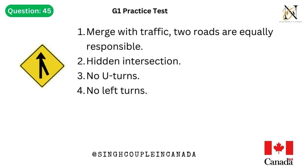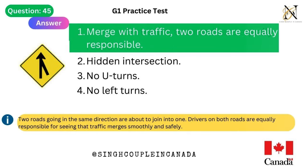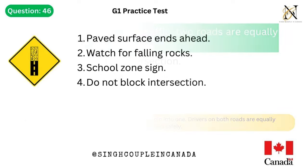Question 45. This traffic sign means: 1. Merge with traffic. 2. Hidden intersection. 3. No U-turns. 4. No left turns. Answer is 1. Merge with traffic — two roads are equally responsible. Two roads going in the same direction are about to join into one. Drivers on both roads are equally responsible for seeing that traffic merges smoothly and safely.